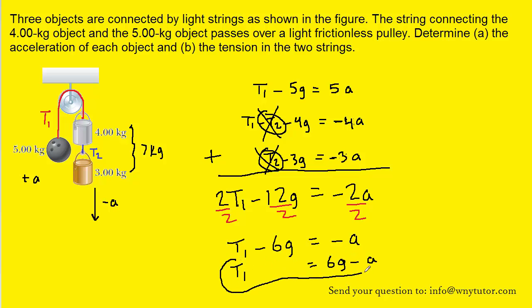So here we have an equation for t1. We have it equal to 6g minus a. What's really nice is we can hold on to that equation but we can also plug it in back into perhaps the first equation and that's going to allow us to calculate the acceleration. So that's our next step.